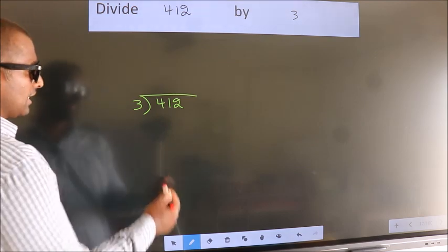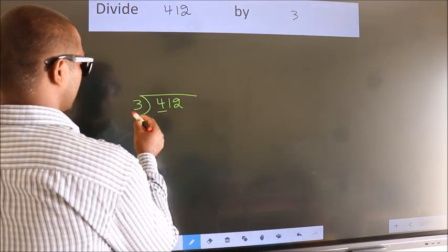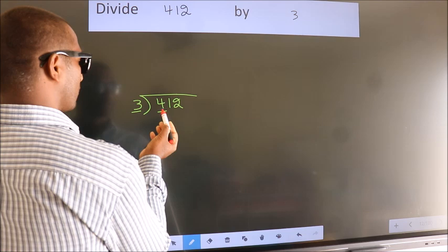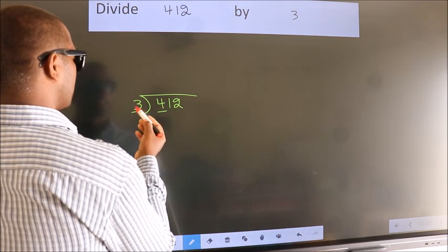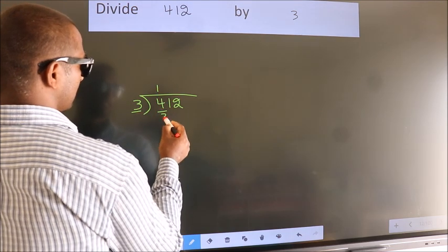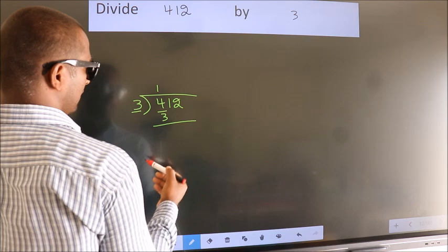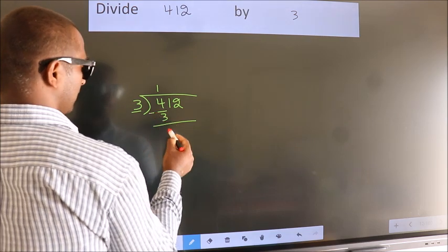Next, here we have 4, here 3. A number close to 4 in 3 table is 3 1s 3. Now we should subtract, we get 1.